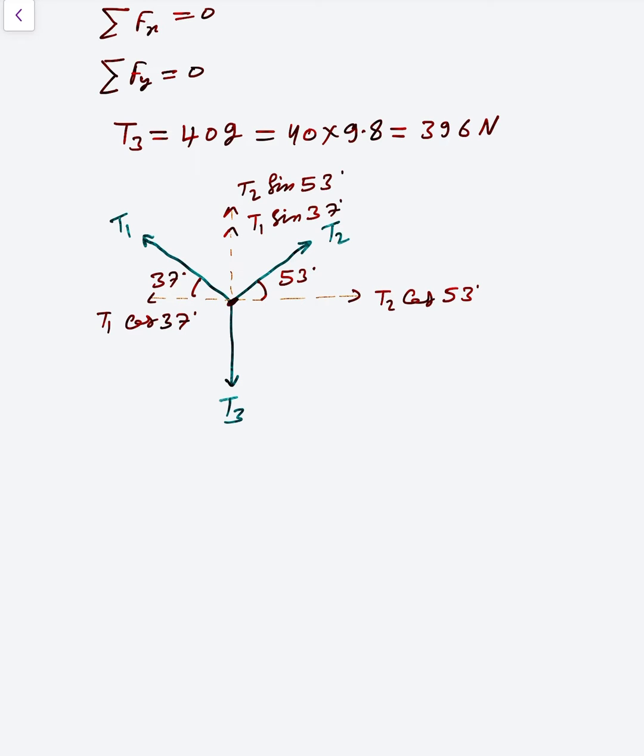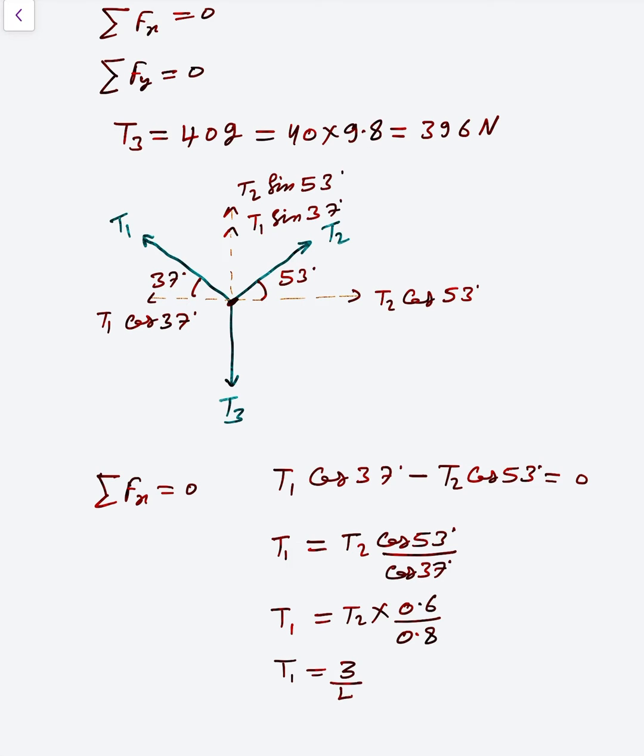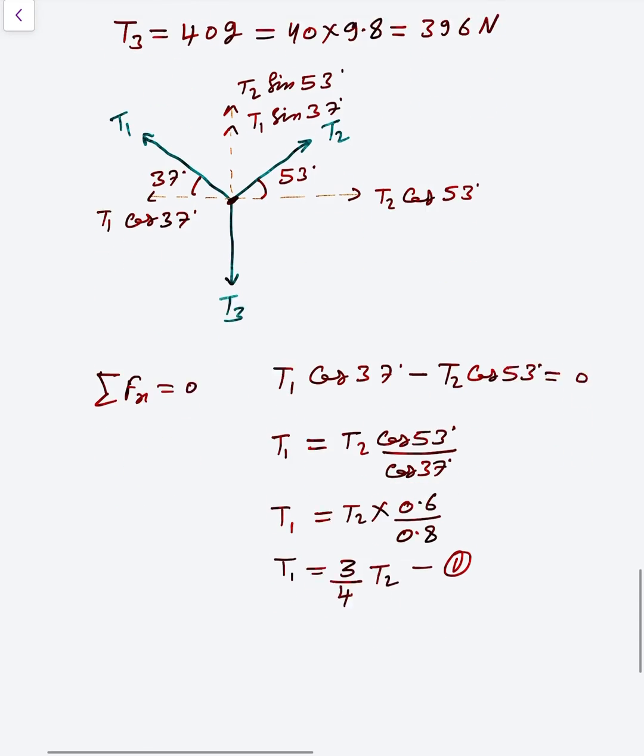Now net force on that point is zero, so F_x equals zero. So T1·cos37° minus T2·cos53° equals zero. Therefore T1 equals T2·cos53° divided by cos37°, which is T2 × 0.6/0.8. So you can say that T1 is 3/4 T2. This is equation number 1.